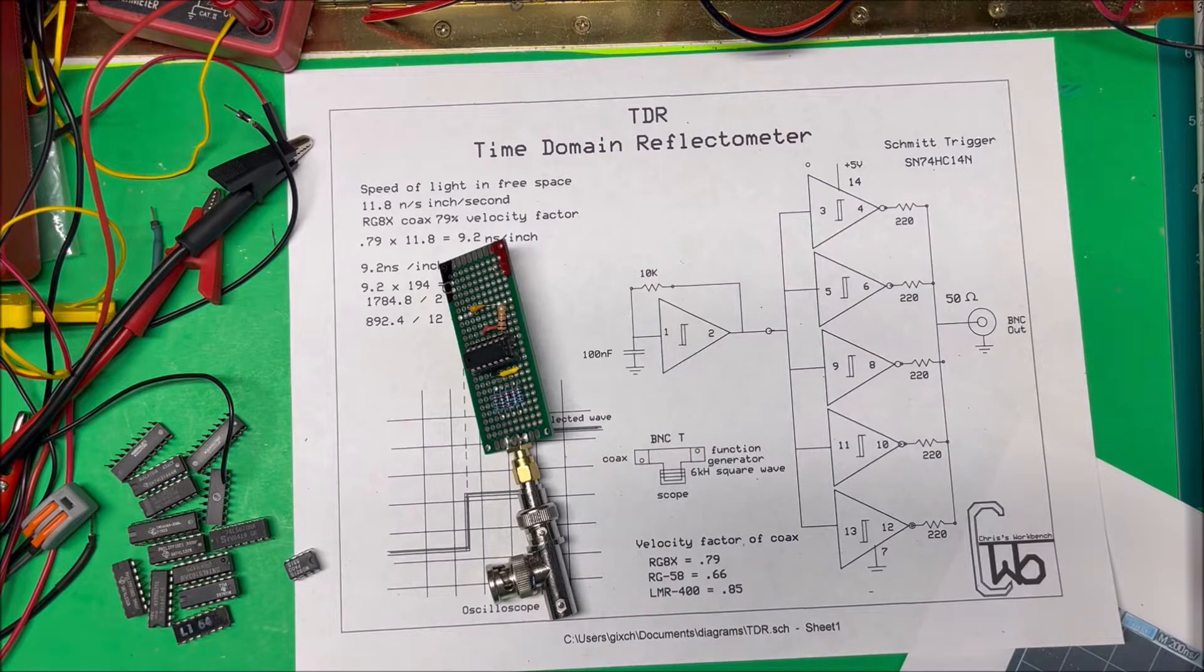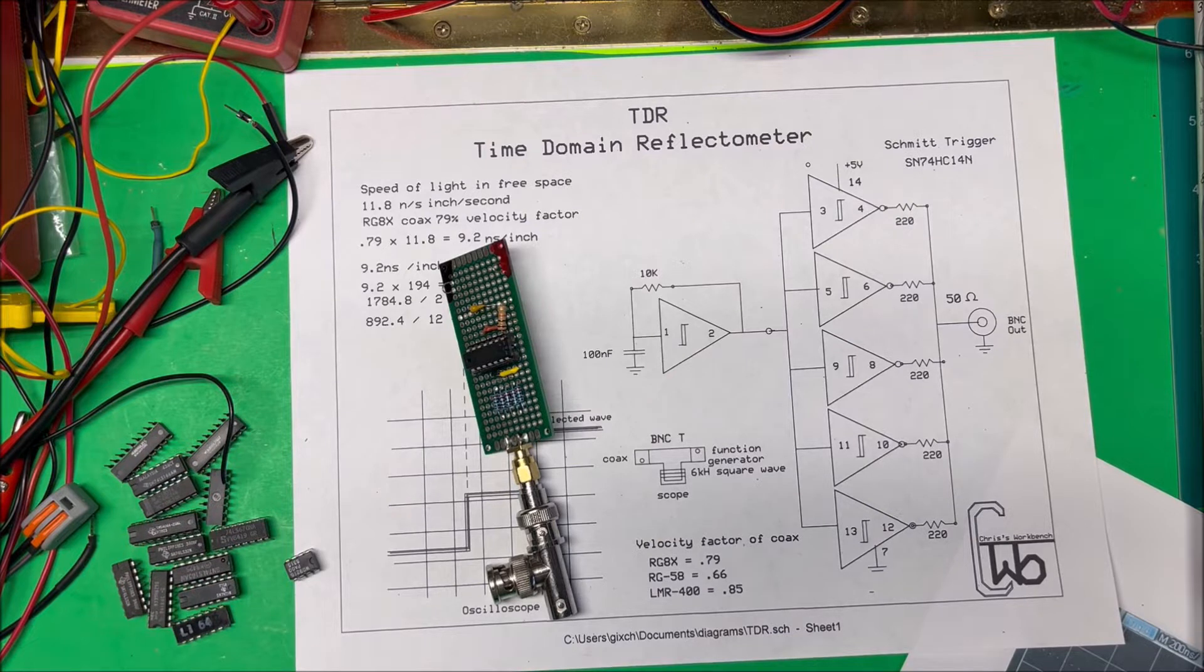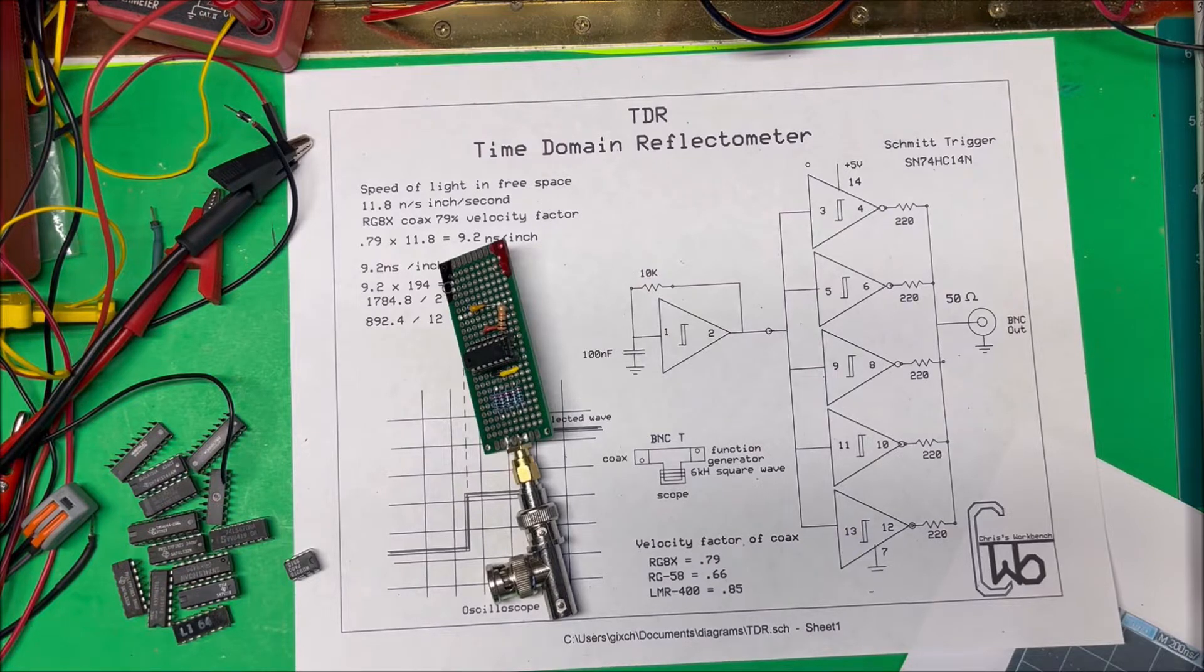Now we send a signal down the cable and if it encounters an impedance that is, you know, say zero, a short circuit, or infinite, an open circuit, no energy is going to be transferred into the new medium and all the energy is going to be reflected back.